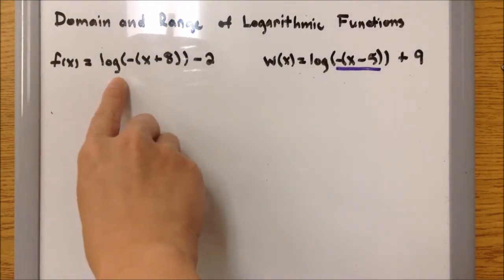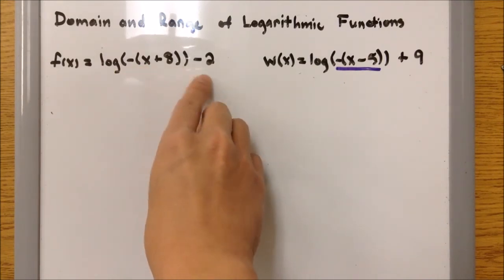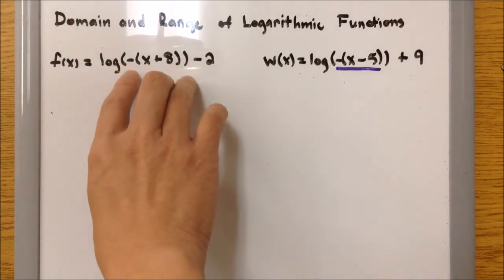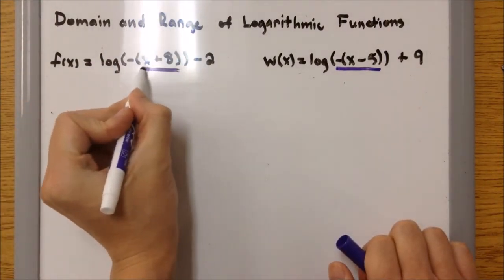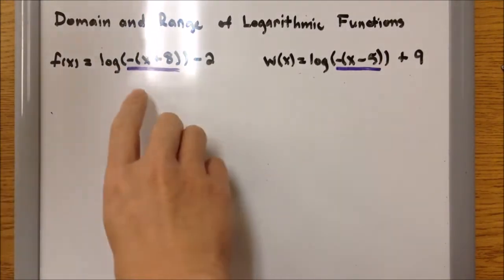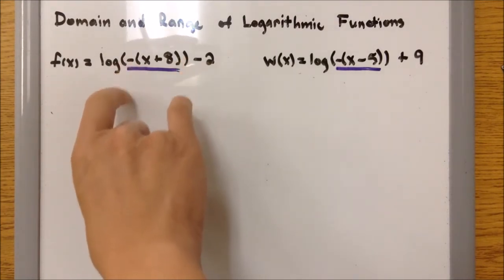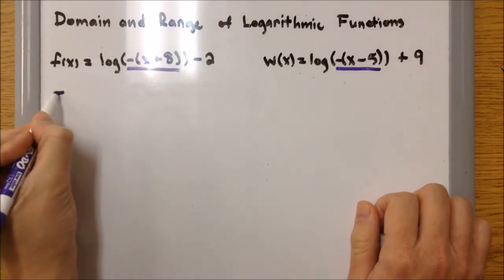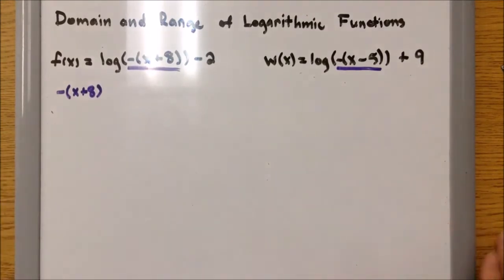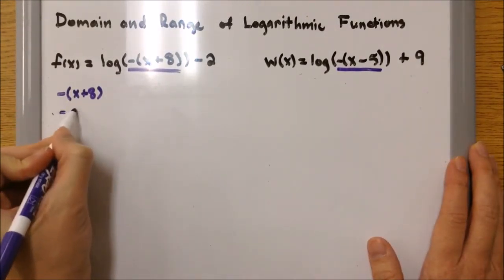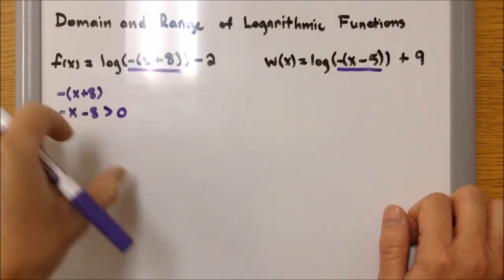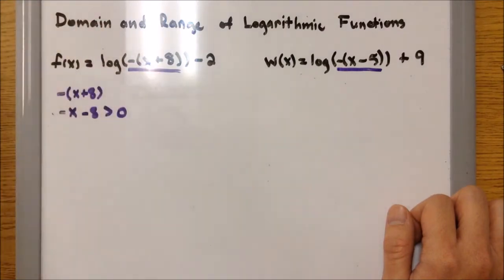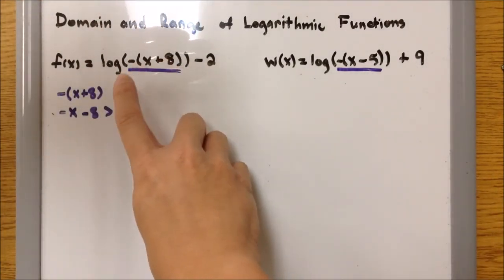Example 5: f of x equals log of negative x plus 8, then minus 2. What's different is we now have a negative inside the outer parenthesis in front of x. We need to focus on the entire inside of the outer parenthesis: negative x plus 8. We distribute the negative, giving us negative x minus 8. Whatever comes out must be greater than 0 — ensuring what's inside the log is positive, not 0 or negative, in order for it to work.